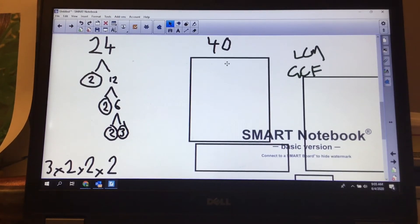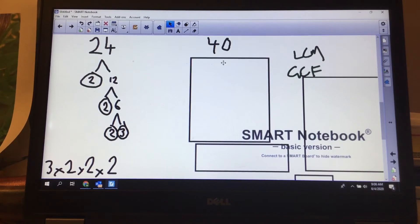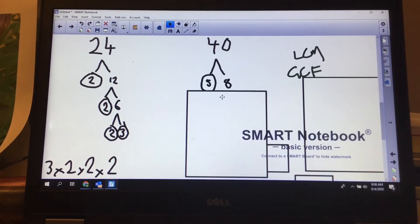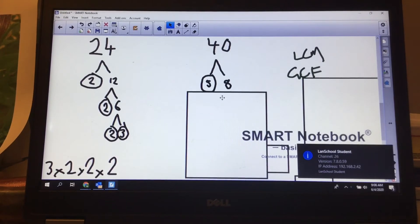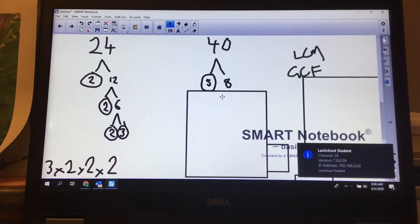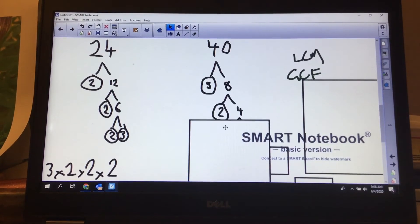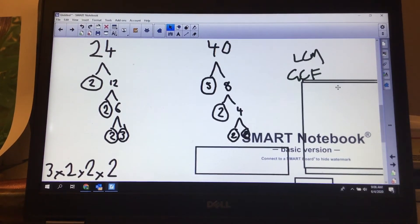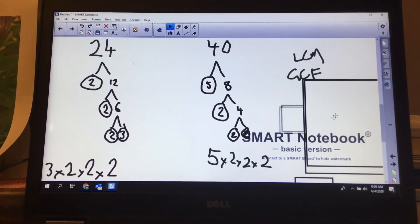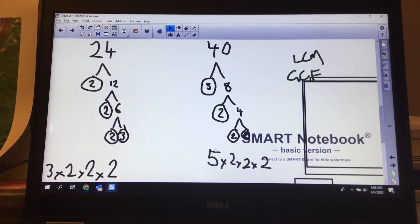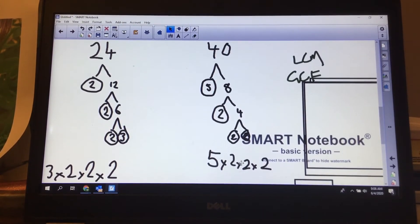I want to do 40. It ends in a 0 or 5, so I'm actually going to divide by 5 first. I divide by 5 and I get 8. I divide 8 by 2 and I get 4. I divide 4 by 2 and I get 2 groups of 2. So my prime factorization for the number 40 is 5 times 2 times 2 times 2.